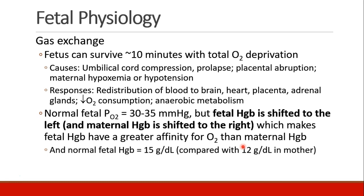The normal fetal PO2 is only 30 to 35 millimeters of mercury. But fetal hemoglobin is slightly different than adult hemoglobin — it is shifted to the left. We know that maternal hemoglobin is shifted to the right, and this makes fetal hemoglobin have a much greater affinity for oxygen than maternal hemoglobin. The system is designed to facilitate transfer of oxygen from the mother to the fetus. Also, normal fetal hemoglobin is about 15 grams per deciliter compared with only 12 grams per deciliter in the mother.